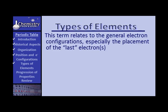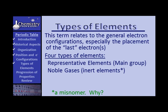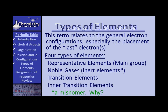Let's talk about types of elements. Now, this term relates to the general electron configurations. Particularly, the placement of the last electron, if you think about the electrons coming in one after the other, and filling from lowest energy to highest energy. Based on this, there are four types of elements. They are the representative elements, sometimes called the main group elements. There are the noble gases, sometimes referred to as inert elements, but we know that's a misnomer. Why? That's right. The elements actually can react, can be made to react. The transition elements, and then we have the inner transition elements. Four types of elements.